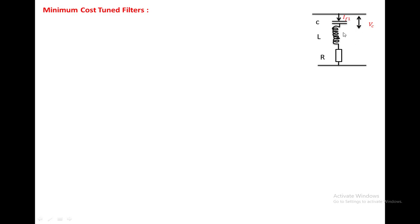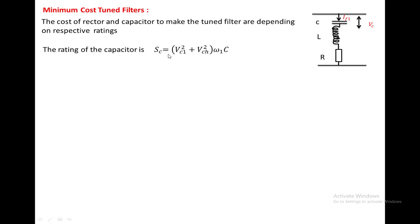Now we consider the minimum cost of the tuned filter. The tuned filter consists of a capacitor and a reactor, so its cost depends on the ratings of both. The rating of the capacitor SC equals the fundamental voltage across the capacitor plus the harmonic voltage across the capacitor, multiplied by omega1·C. The rating of the inductor SL equals (IF1² + IFH²)·omega1·L, where IF1 is the fundamental filter current and IFH is the harmonic filter current.